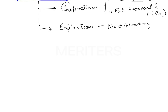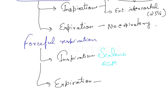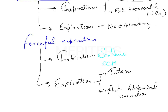Now the muscles involved in forceful respiration: during forceful inspiration, you have the scalene muscle and sternocleidomastoid muscle. During forceful expiration, you have the anterior abdominal muscles and the internal intercostal muscles.